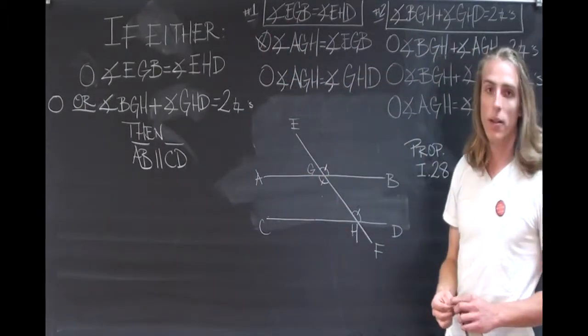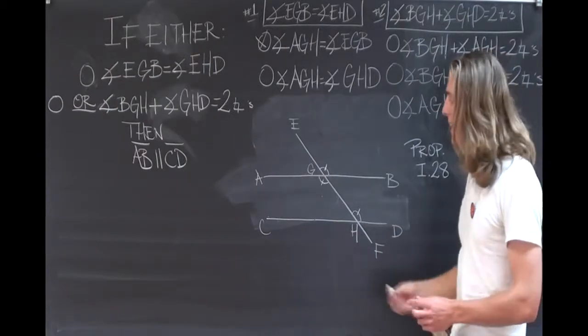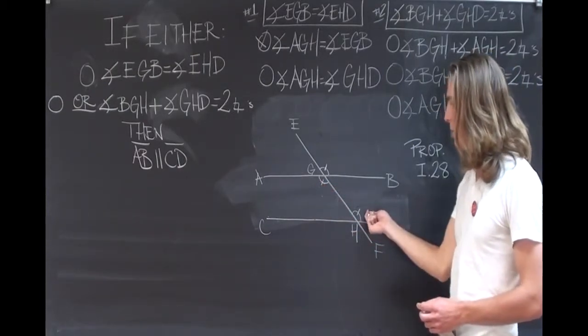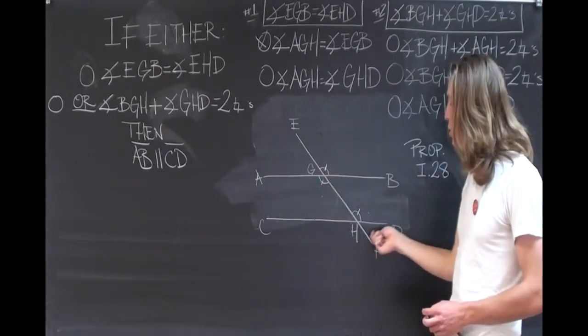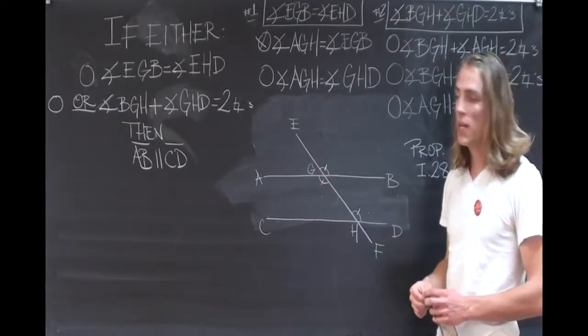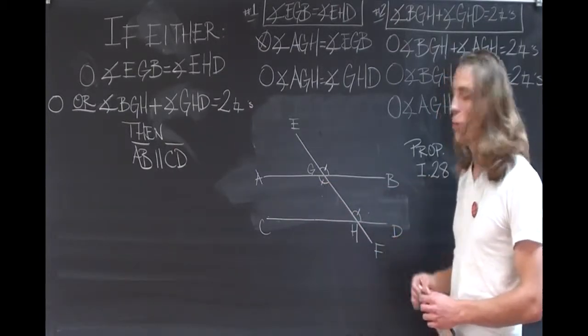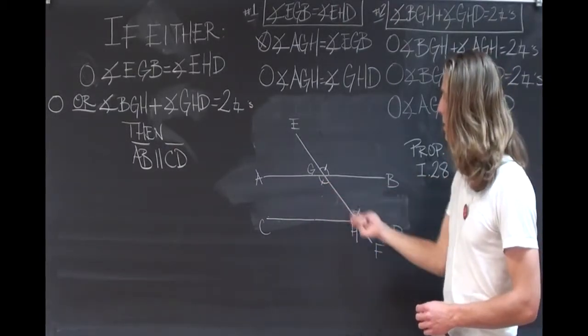Now, we also know from Proposition 27, that if alternate interior angles, that is, AGH and GHD are equal to one another, then the lines AB and CD will be parallel. We see that they are.